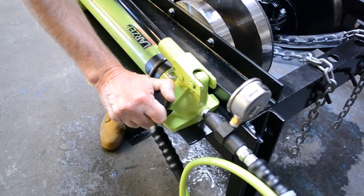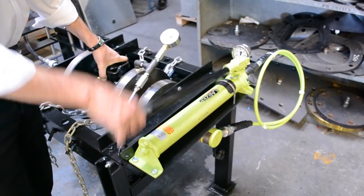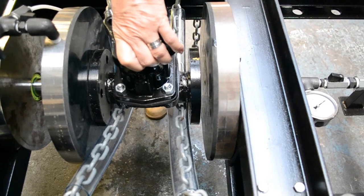Rotate the valve on the hydraulic pump clockwise to close, and pump to clamp the valve into the test rig until the gauge reaches 400 kg and no more.